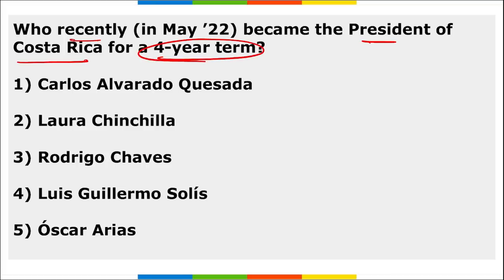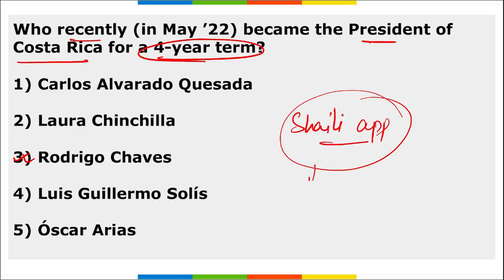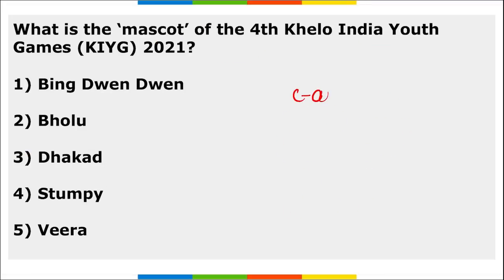Rodriguez Chaves became the president of Costa Rica for four years. The Shaili application was launched by the Kerala government for diagnosing and controlling lifestyle diseases.